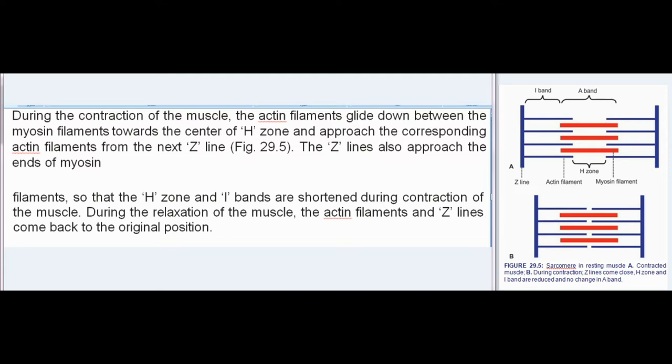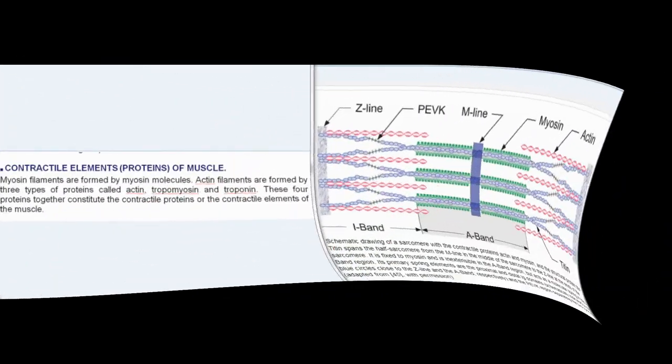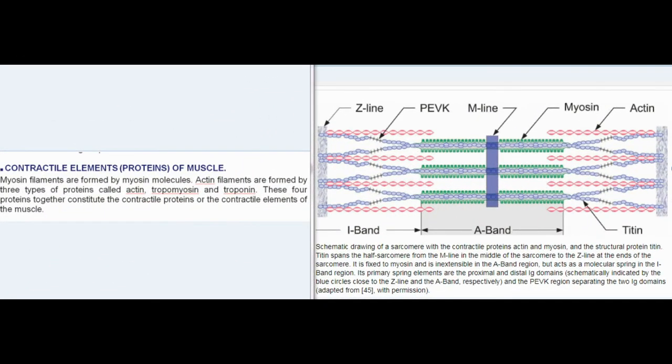Contractile Elements of Muscle: Myosin filaments are formed by myosin molecules. Actin filaments are formed by three types of proteins called actin, tropomyosin, and troponin. These four proteins together constitute the contractile proteins or the contractile elements of the muscle.